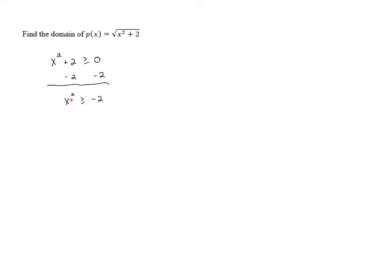Now, we know that if we take any number and square it, we're going to end up with something that's either positive or 0. It's not possible to square something and end up with a negative number. So if we pick any number for x, like 3, we square it, we get 9, which is positive. Negative 2, you square it, it's 4, it's positive. Negative 7, we square it, it's positive 49. And even 0 squared is 0, which is not negative. So this quantity on the left is always going to be positive or 0, and that means it's always going to be greater than or equal to negative 2.